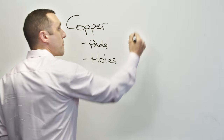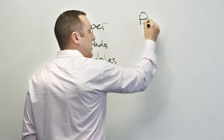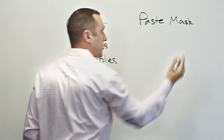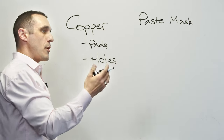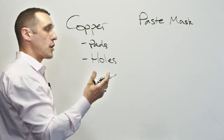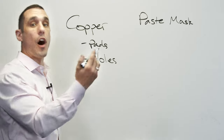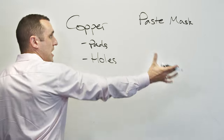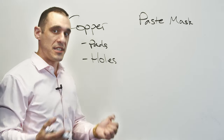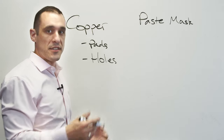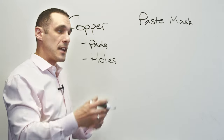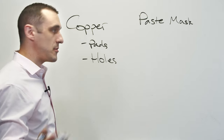The next important layers are paste mask layers. The paste mask layers define where solder paste is deposited so that components can be assembled onto a PCB. The paste mask layers are defined automatically through a design rule inside of the PCB editor — in Altium, that's in the PCB rules and constraints editor when you're inside of the PCB editor window and you have a PCB open.